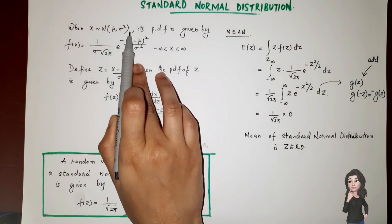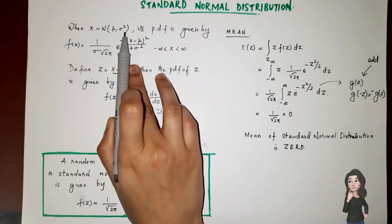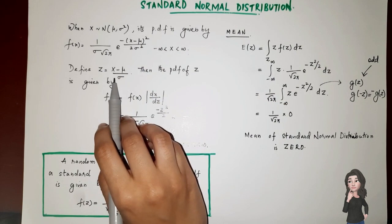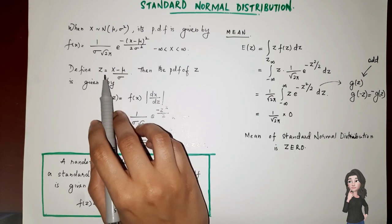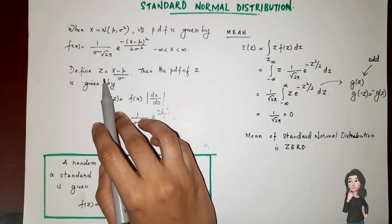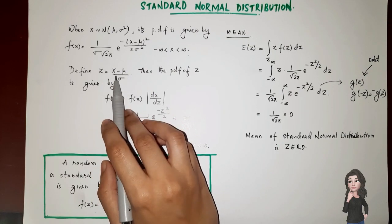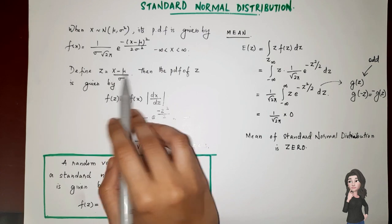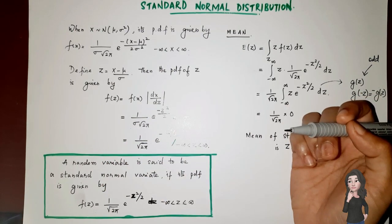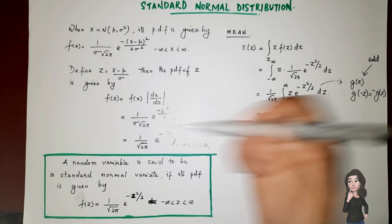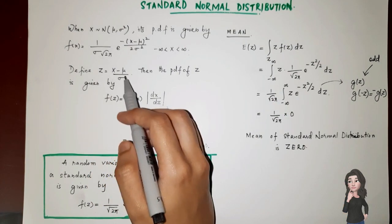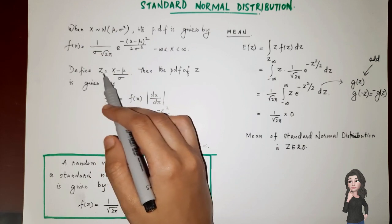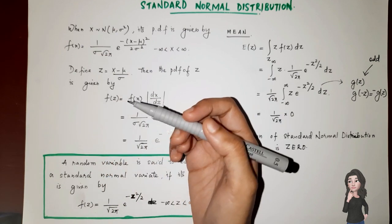So that is a normal random variable denoted by x follows normal with mean μ and variance σ². Now what we are going to do is check a transformation of this x, where z = (x minus μ) divided by the standard deviation σ.